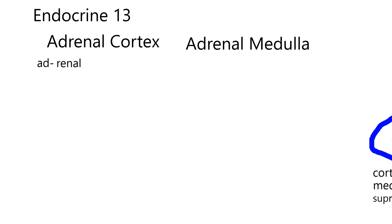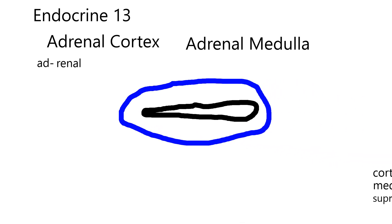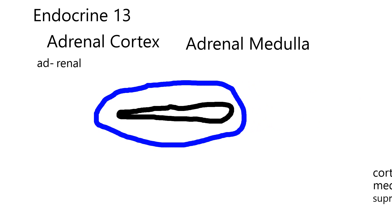It's not always in the same spot in every species, so you've got to be careful when you're dissecting. Here's a depiction of a gland cut in a transverse section — transverse means perpendicular to the long axis. If I cut it like this, I get a cross section, and the adrenal gland has a cortex and a medulla.